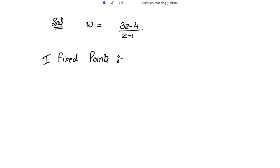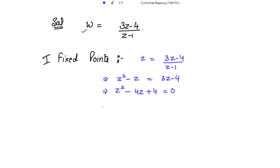To get the fixed points, we put w equal to z. So writing this as z = (3z - 4) / (z - 1), and cross-multiplying, we get z² - z = 3z - 4. That gives us z² - 4z + 4 = 0, which as a perfect square is (z - 2)² = 0, giving z = 2 as the only fixed point.